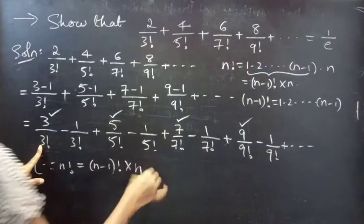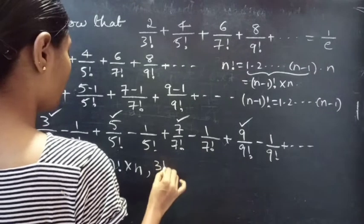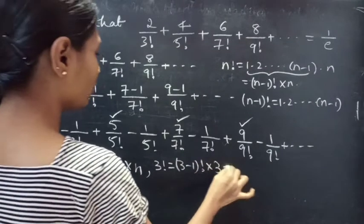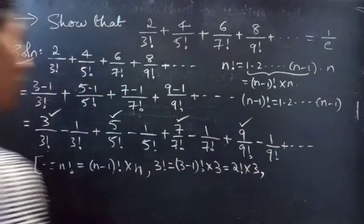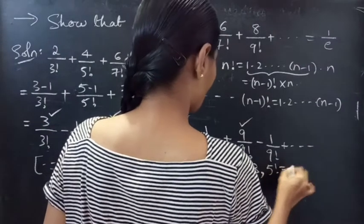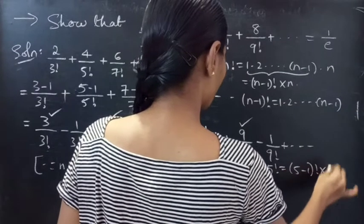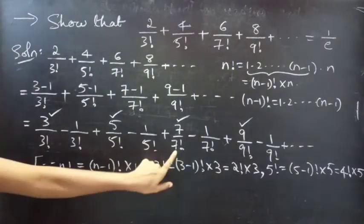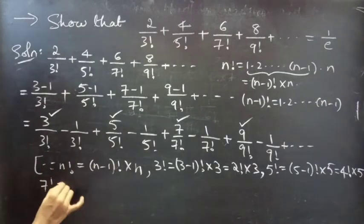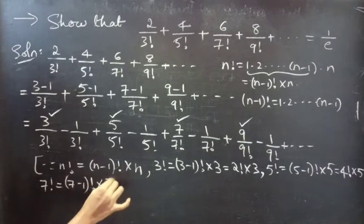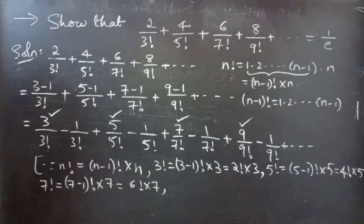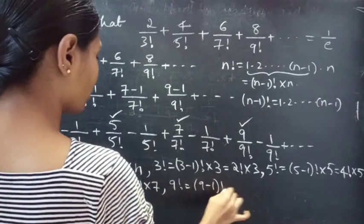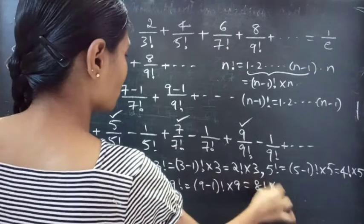You have 3!, which can be written as (3-1)! × 3 = 2! × 3. Likewise, 5! = 4! × 5, 7! = 6! × 7, and 9! = 8! × 9.